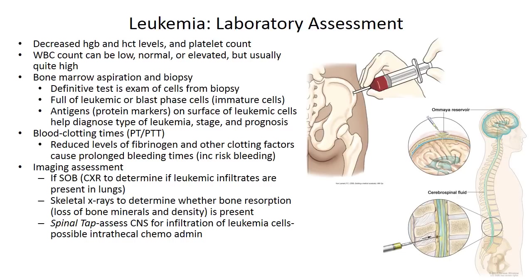Skeletal x-rays are also done to determine whether bone resorption is present, as leukemia patients may have loss of bone minerals and density. Spinal taps can also be performed to assess for cerebral infiltration of leukemia cells into the cerebrospinal fluid. The Ommaya reservoir in the brain can be used to insert intrathecal chemotherapy to treat leukemia in that area.